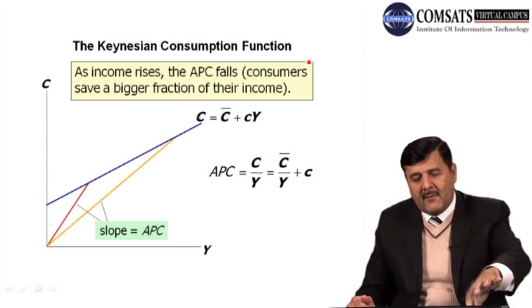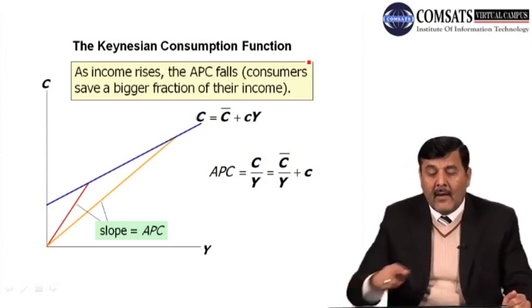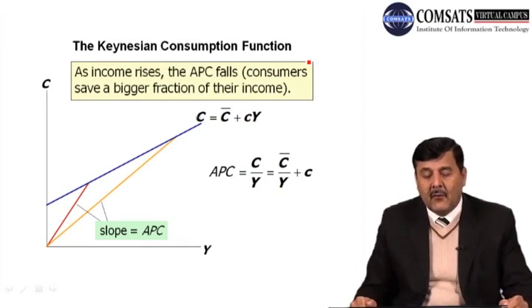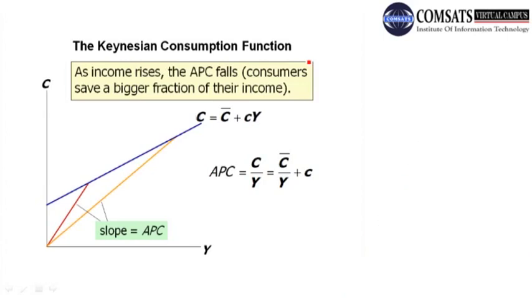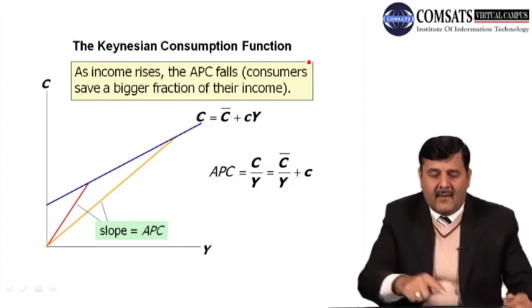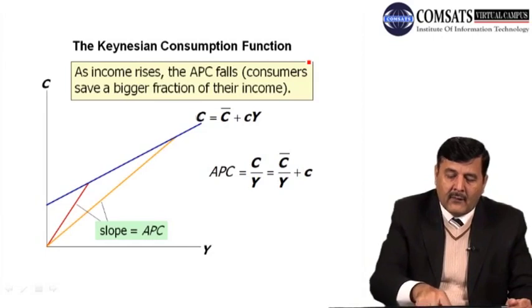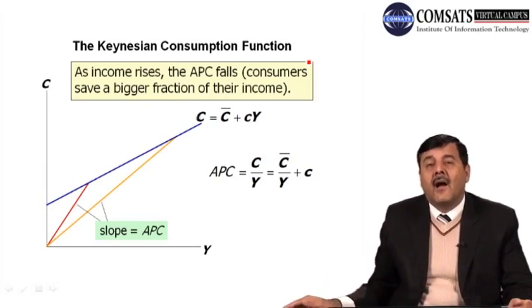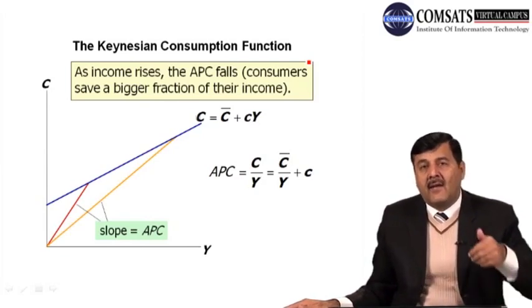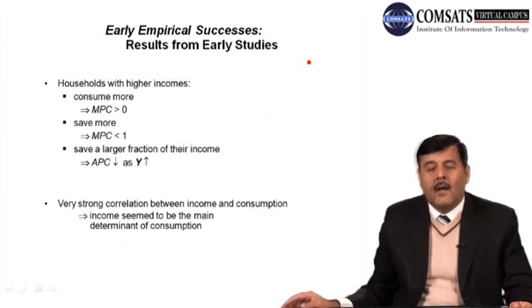On the diagram, the C line is the consumption function. At any given income level, APC equals the slope of a ray from the origin to that point on the consumption function. As income increases, that slope becomes smaller, confirming that APC falls as income rises. This is the property of Keynes' consumption function: as income goes up, consumption also goes up but by a lesser proportion, so APC falls.